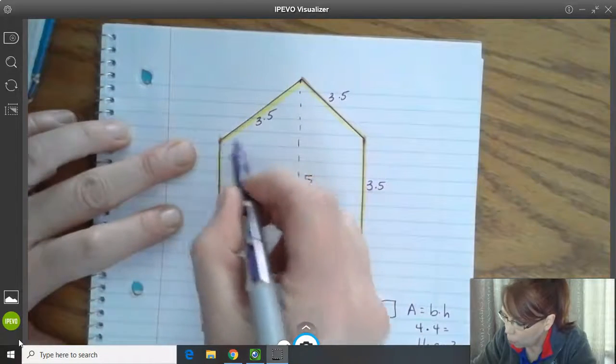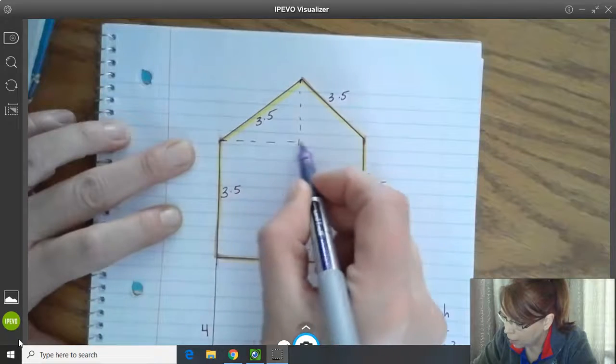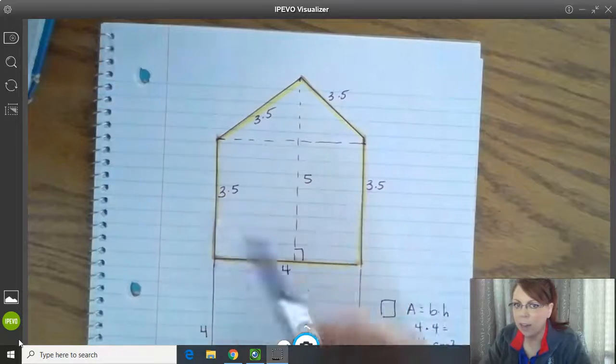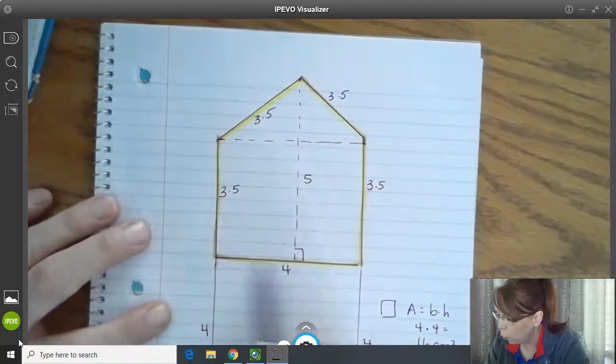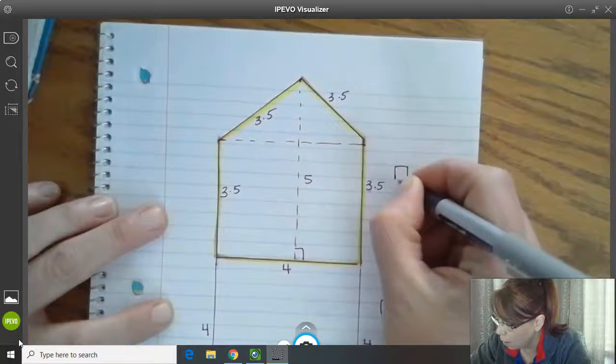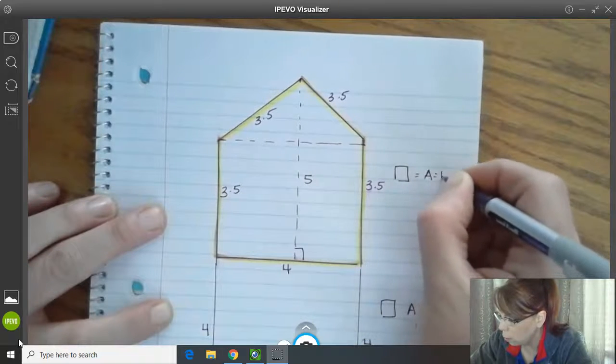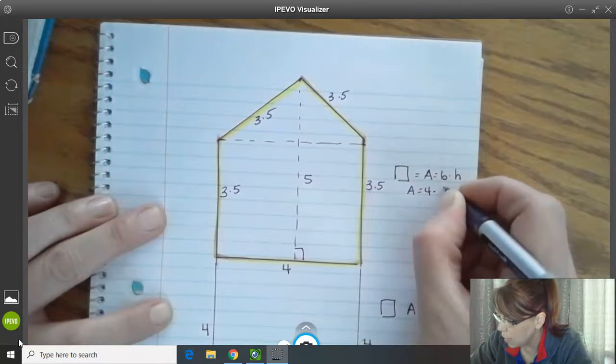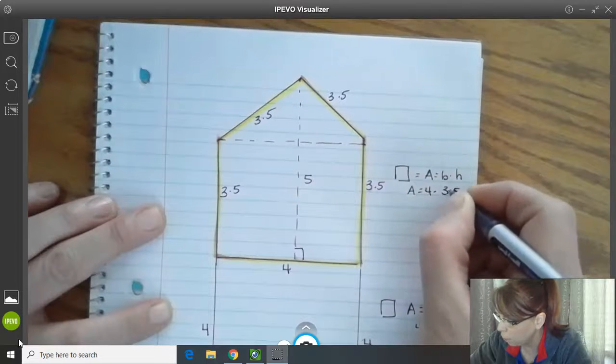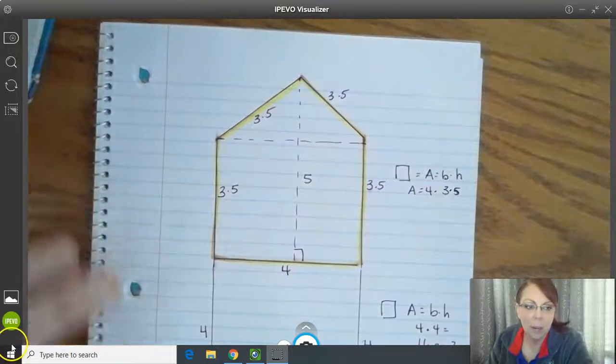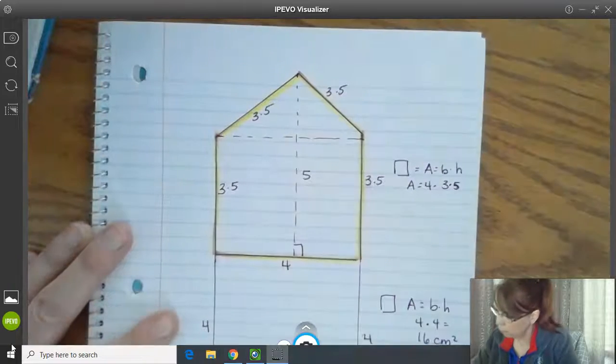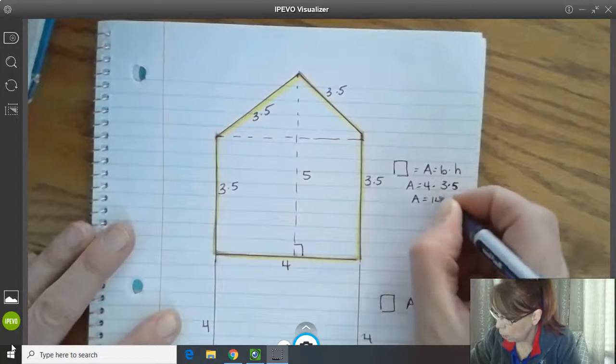And now I can do this one right here. I'm going to divide this across. Okay. And so now I have for this square here, the dimensions of 4 by 3.5. Area equals base times height. So area equals the base is 4 times height is 3.5. I'm going to get my calculator and do this math. So 4 times 3.5 equals 14.